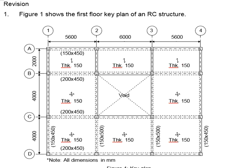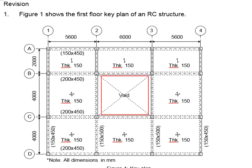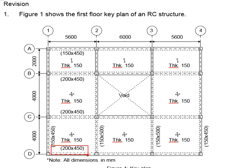Let us get started. First, there is a structural key plan given. There is a lot of information shown in the structural key plan — you will see the beams, the columns, the slabs. The details of the beams and the thickness of the slabs are given, as well as the dimensions of the members. There is a void without any slab at the middle of the key plan. All dimensions are in mm, so the 5600s are in mm, the thickness of 150 is in mm, and the beam size is also in mm.